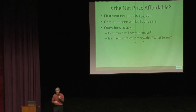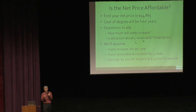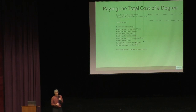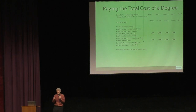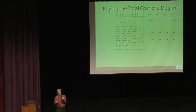For this example, we'll assume costs increase 2% per year, the aid is renewable and constant over four years, the student has $2,000 in savings, and the parents have $25,000 in savings. The total cost of a degree including inflation comes to $135,000. The student received $1,800 per year in work-study, and we'll also factor in federal student loans. If you have to borrow for college, always start with federal student loans — they have borrower protections, guaranteed availability, and a reasonable interest rate.